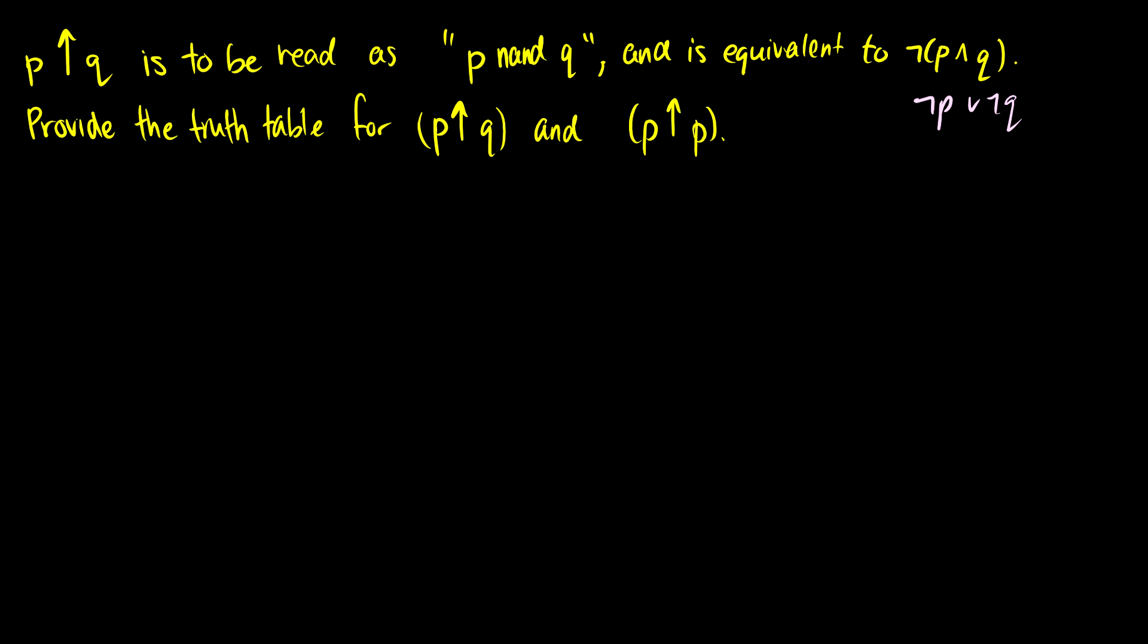First I want to provide the truth table for p up q and the truth table for p up p. So first we do the truth table for p up q and we want to take a look at what this looks like so we can find some logical equivalences. I'm going to do two truth tables so I don't have unnecessary rows in the second.